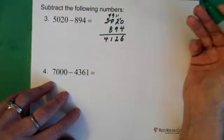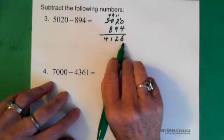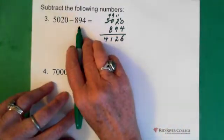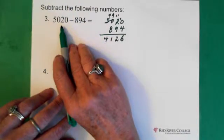And again, if we're feeling unsure, we just take the 4,126, add it to the 894, and it should equal 5,020.